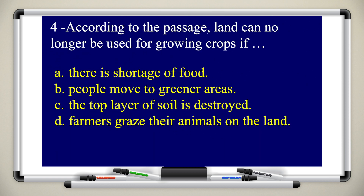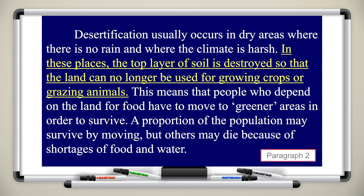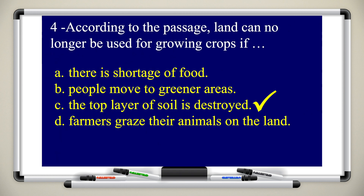Question four: according to the passage, land can no longer be used for growing crops if... Let's go to the second paragraph to find the answer. It says: 'In these places, the top layer of soil is destroyed so that the land can no longer be used for growing crops or grazing animals.' So the answer is: the land can no longer be used when the top layer of soil is destroyed.